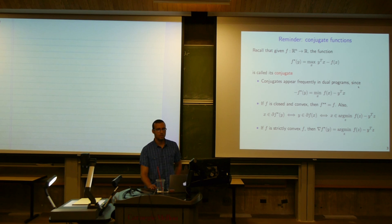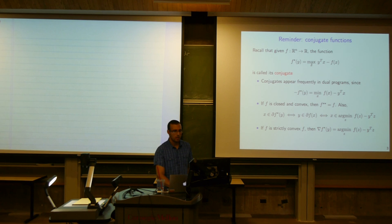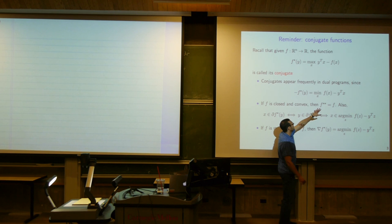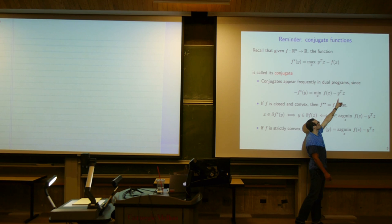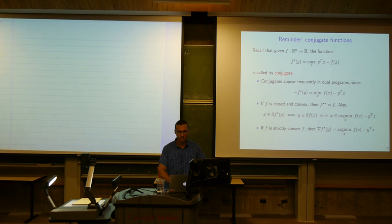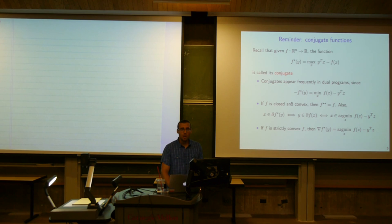Conjugates often appear in the context of dual problems. If we apply a minus sign to both sides, the negative conjugate at y equals the minimum over x of f of x minus y-transpose x — this looks like a piece of the Lagrangian we minimize. Such a term would arise from an inequality or equality constraint on the variable x, and minimizing out x gives a piece of the dual function.